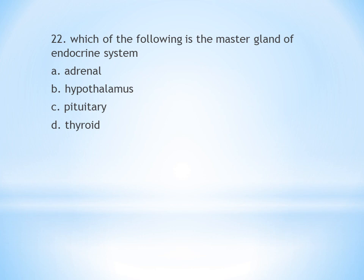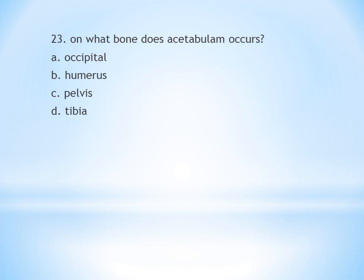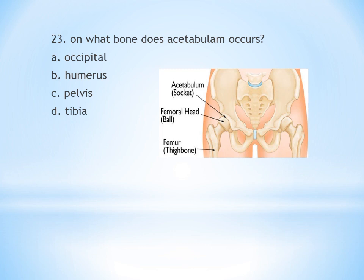Question 23: On which bone does the acetabulum occur? A. Occipital. B. Humerus. C. Pelvis. D. Tibia/fibula. The acetabulum is located on the pelvis. The answer is C, pelvis.